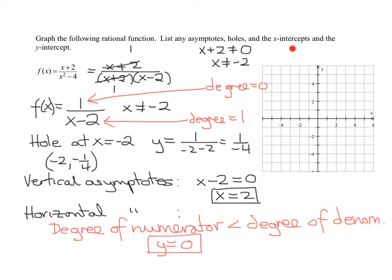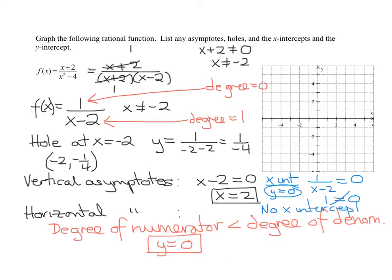Now I need to find the x and y intercepts. To find the x-intercept, we set the function equal to 0. A fraction equals 0 only when the numerator equals 0 — but 1 can never equal 0. Therefore there are no x-intercepts, which is important information when drawing the graph.